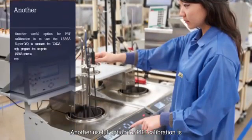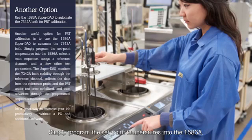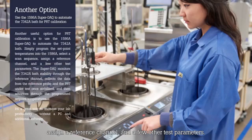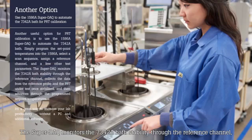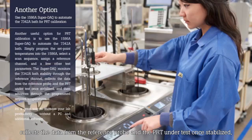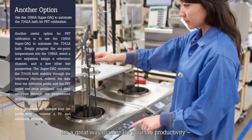Another useful option for PRT calibration is to use the 1586 Super DAC to automate the 7342 bath. Simply program the set point temperatures into the 1586, select a scan sequence, assign a reference channel, and a few other test parameters. The Super DAC monitors the 7342 bath stability through the reference channel, collects the data from the reference probe and the PRT under test once stabilized, and then advances through the programmed set point temperatures. It's a great way to increase your lab productivity without a PC and additional software.